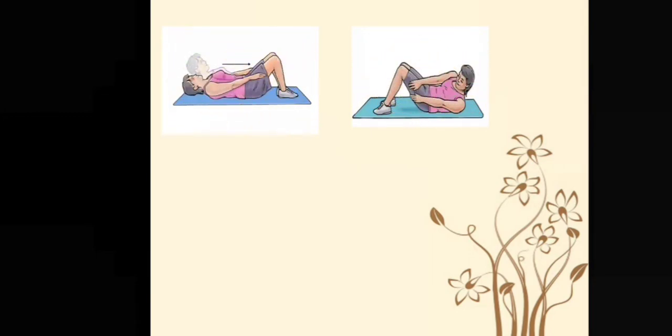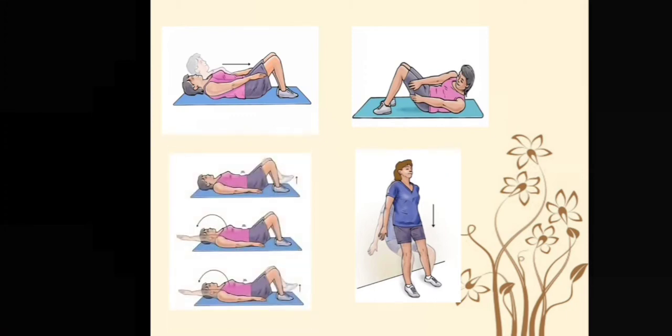In the next step, the mother is taught partial curl ups and going for diagonal curl ups. She is taught how to go for wall squats and core exercises are started along with heel slides and arm movements.